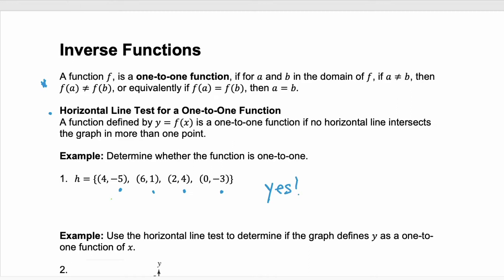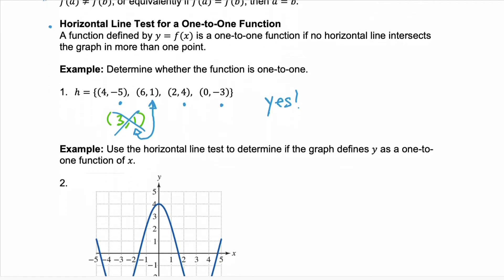Now, if we had another point in here, say the point three, one, because this has a range value of one, and our initial point here had a range value of one, and they have different x values, that would make this function not one-to-one. But that's not the case here.